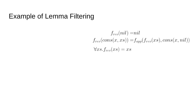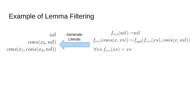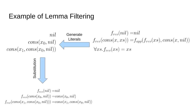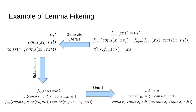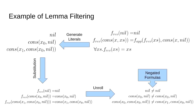We generate three literals, substitute them in for the quantified variables removing the quantifier, apply the definition, negate the formulas, and send them to the SMT solver. It correctly points out that the last formula is satisfiable, so we skip this lemma.